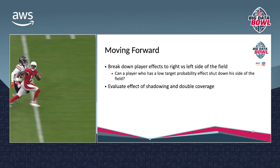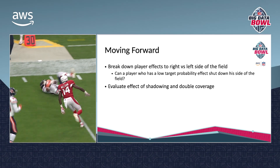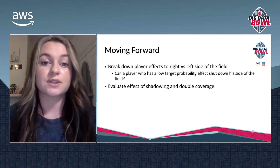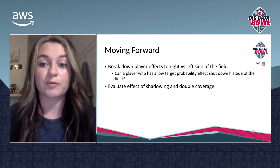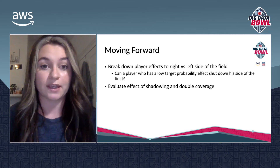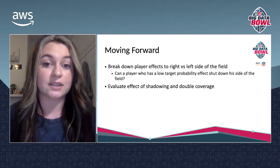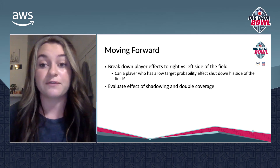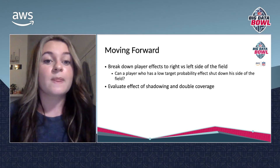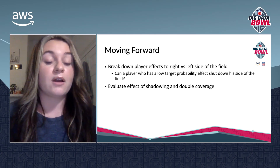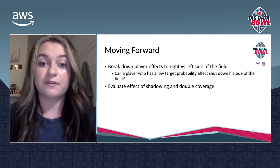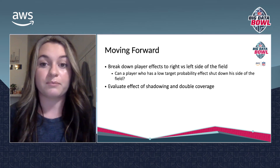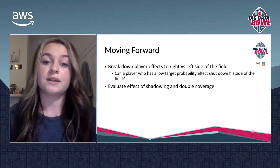Moving forward, I think there are a lot of ways that this can be used, and it's a really great framework for target probability. Two things I would love to do: break down those player effects to either the right versus left side of the field — can a player with a low target probability effect shut down his side of the field and force the throw to the right side? I also think this can be used to evaluate the effect of shadowing and double coverage, as shadowing has been pretty prevalent in the NFL the last couple of years.